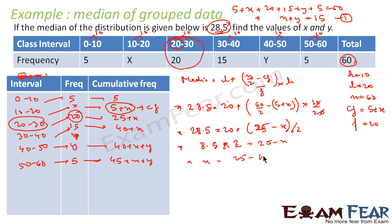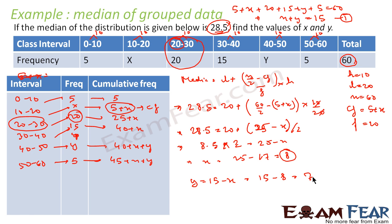So x comes out to be 25 minus 17, which is 8. I got x equal to 8. Since x plus y equals 15, y is equal to 15 minus 8, which is 7. So x equals 8 and y equals 7 — that's the answer.